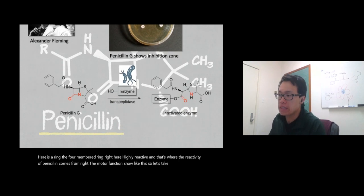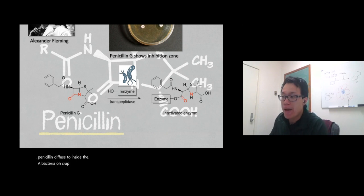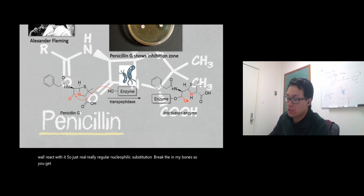Penicillin diffuses inside the bacteria and meets up with transpeptidase, which is an enzyme in bacteria to build cell wall. It reacts with this through regular nucleophilic acyl substitution, breaks the amide bond, so you get an inactivated enzyme. This enzyme is useless now - can't do anything, can't build cell wall, and the bacteria is dead.